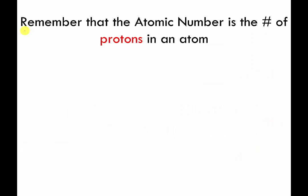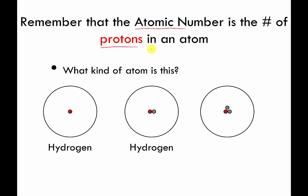Again this is more review. I said remember atomic number is number of protons in an atom. And I showed you three different versions of hydrogen atoms. These are all hydrogens because they only have one red circle. One red circle in my universe means one proton. One proton means hydrogen atom.